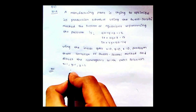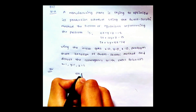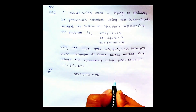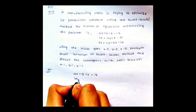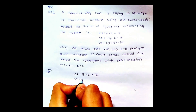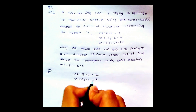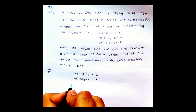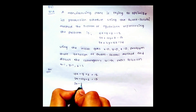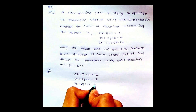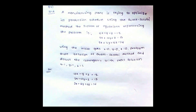The equations given are: 10x + y + z = 12, 2x + 10y + z = 13, and 2x + 2y + 10z = 14. These are the three equations given.